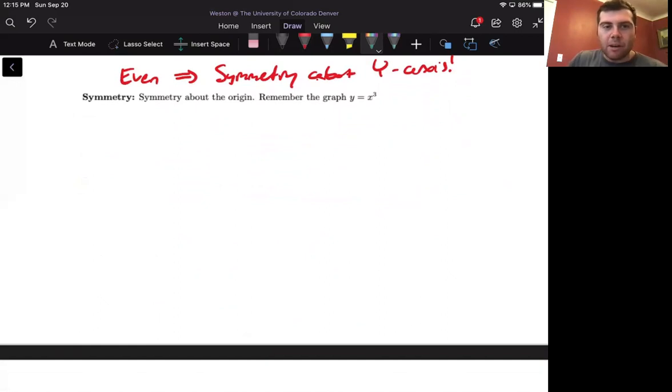Next, we're going to discuss a similar property. We had even, so maybe you can guess what the other kind of function is called: odd functions. Even and odd, they go together.